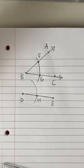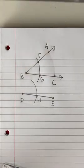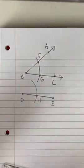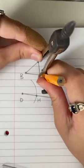Next step is to draw an arc of length GF centered at H. It should intersect the previous arc at J. We're going to draw an arc the length of GF from here to here.